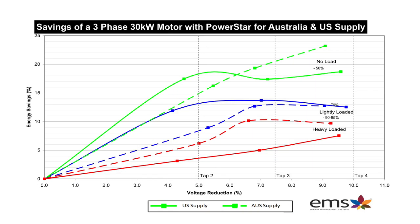Here we have a 30 kW motor bench test, direct on line, with a 9% voltage reduction using Australian voltage. With a no-load motor, we see a 23% energy saving. At lightly loaded, still 13% energy savings. Even at heavily loaded, just under 10% energy savings. The average energy savings we see across full facilities — whether a hospital, cold store, or high-rise building — is between 12 and 15%. Some cases go above 20%; some are at 8%, but those ROIs are still good due to high kilowatt-hour costs and high consumption.